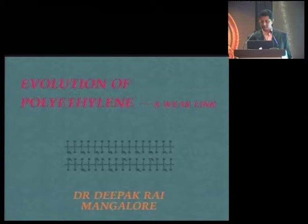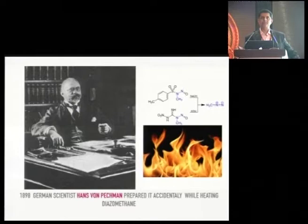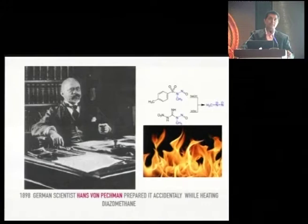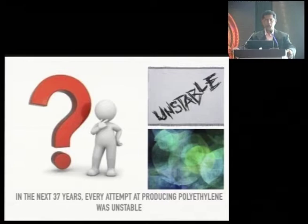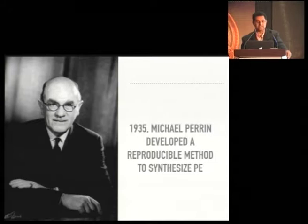Just before I talk about polyethylene, which probably not many of us know much about, I'll talk about the history. As with many discoveries in orthopedic practice, polyethylene was also discovered accidentally when a chemist in 1898 heated diazomethane. This was a very unstable compound and this polyethylene could not be replicated or made stable. Over the next 37 years, every attempt was made to stabilize it, but it was unsuccessful till 1935 when Michael Perrin first developed a reproducible method to synthesize stable polyethylene.